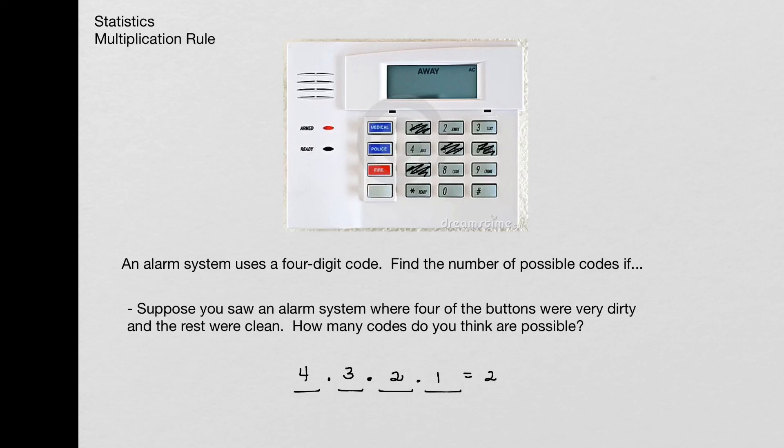And when I multiply those all together, you can see that there's only 24 possibilities. So by not cleaning the buttons on there, what they did was they took the number of possibilities from 10,000, which is what we had the first time when there were repeats allowed, and brought it down to 24. So that's not very secure. So good thing to keep in mind when you have an alarm system, make sure you clean off those buttons. And that's your multiplication rule.